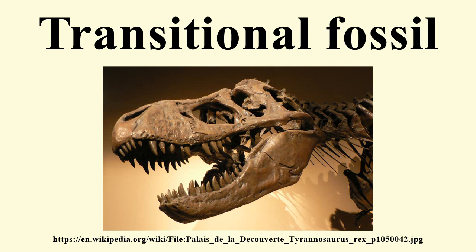The dramatic find of the London specimen of Archaeopteryx in 1861, only two years after the publication of Darwin's work, offered for the first time a link between the class of the highly derived birds and that of the more primitive reptiles. In a letter to Darwin, the paleontologist Hugh Falconer wrote: 'Had the Solnhofen quarries been commissioned, by august command, to turn out a strange being à la Darwin, it could not have executed the behest more handsomely than in the Archaeopteryx.' Thus, transitional fossils like Archaeopteryx came to be seen as not only corroborating Darwin's theory, but as icons of evolution in their own right.